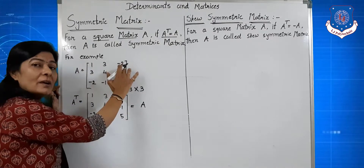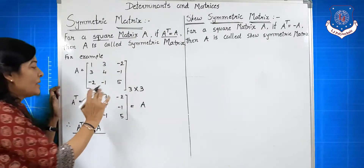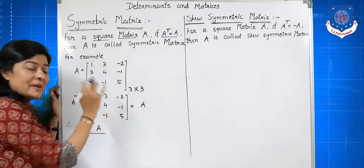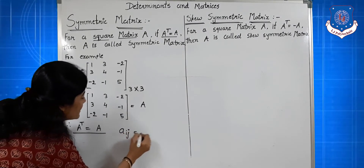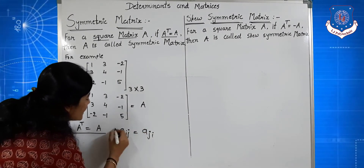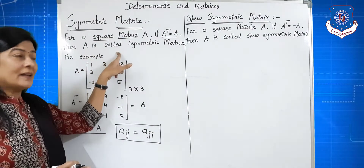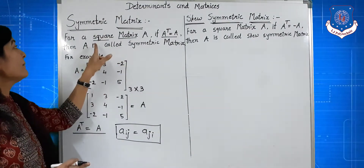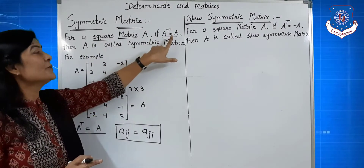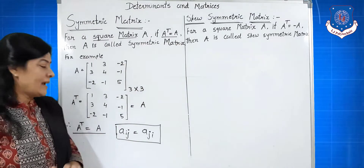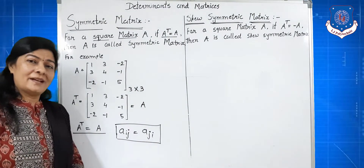In this matrix, A(1,3) — the element in the first row, third column — is equal to A(3,1). In general, Aij is equal to Aji. So for a symmetric matrix: A is a square matrix, A transpose equals A, and Aij equals Aji.